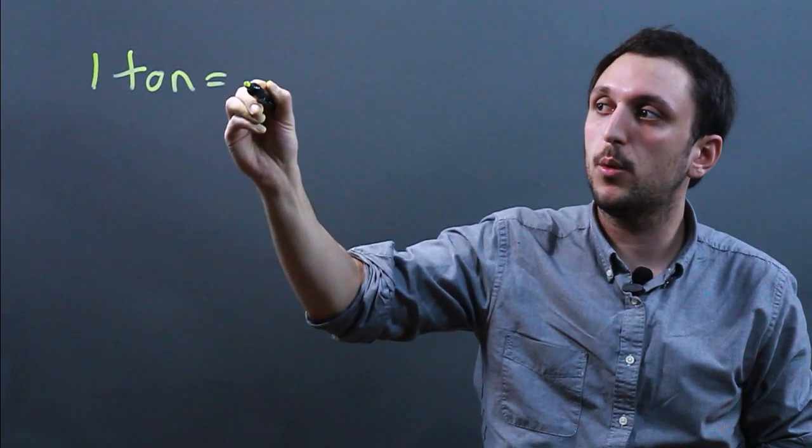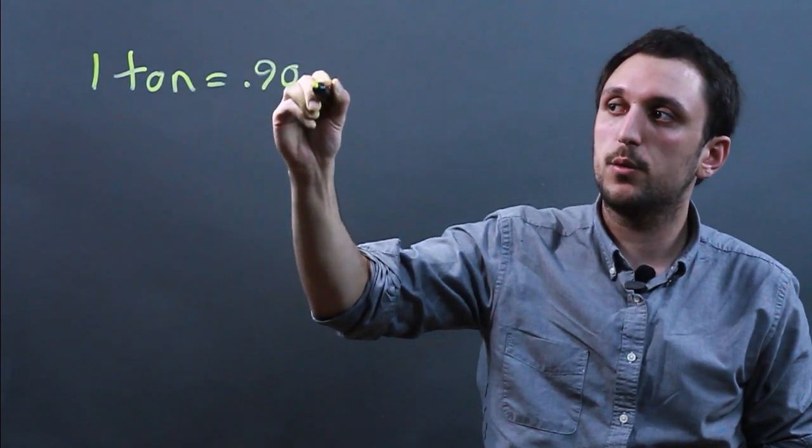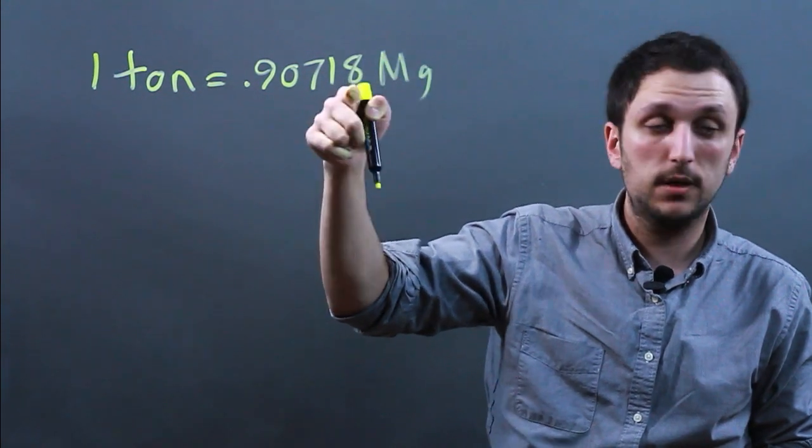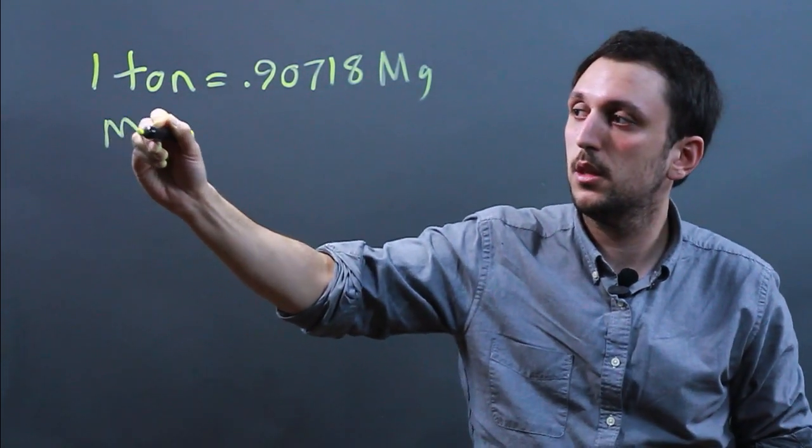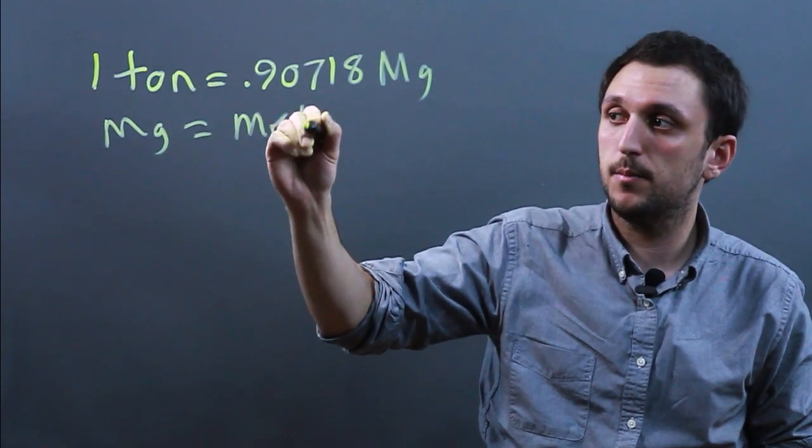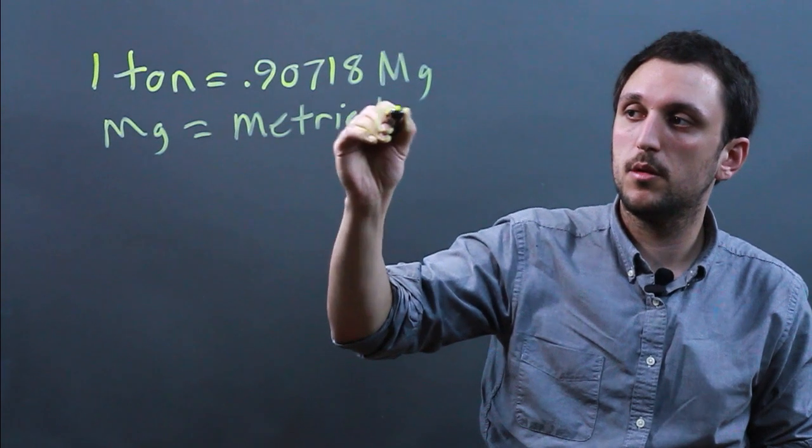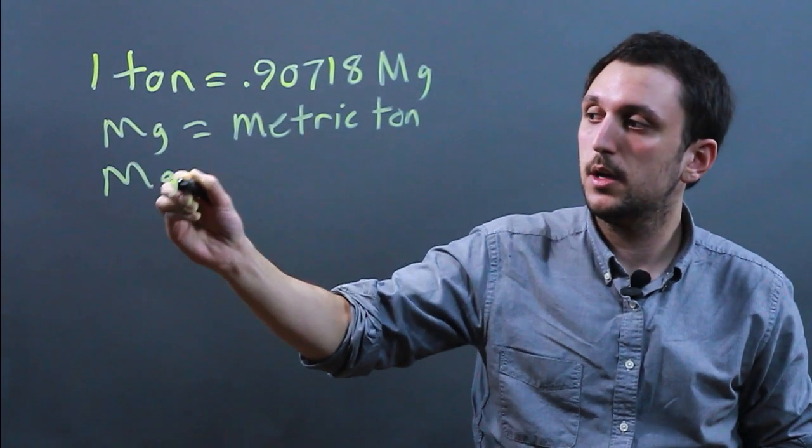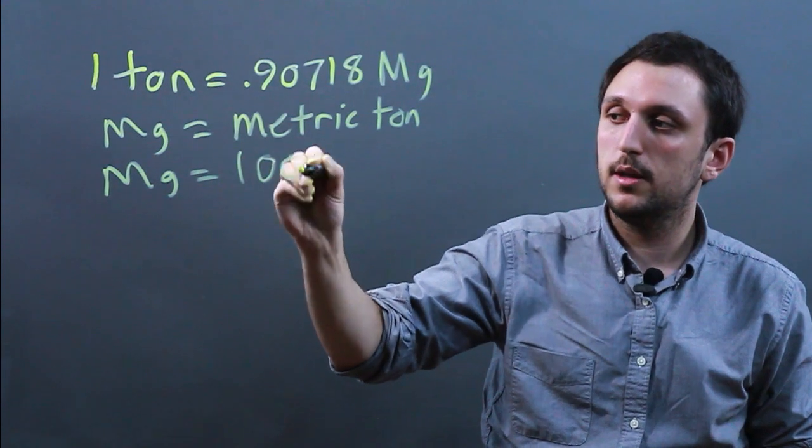So one ton equals 0.90718 megagrams roughly and a megagram is also known as a metric ton. Also, one megagram equals a thousand kilograms.